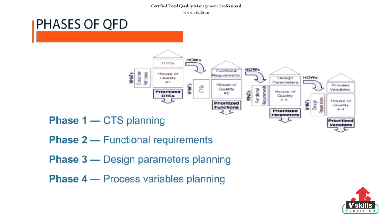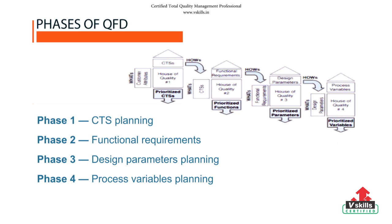QFD is usually deployed over four phases. The figure illustrates the four phases of QFD as: Phase One — CTS Planning; Phase Two — Functional Requirements; Phase Three — Design Parameters Planning; and Phase Four — Process Variables Planning.